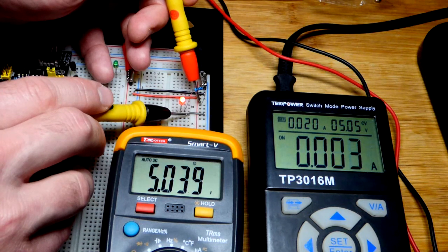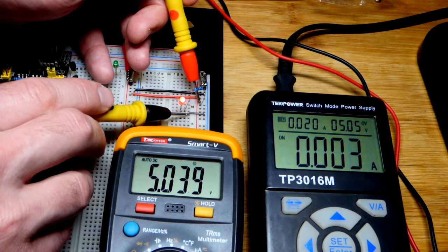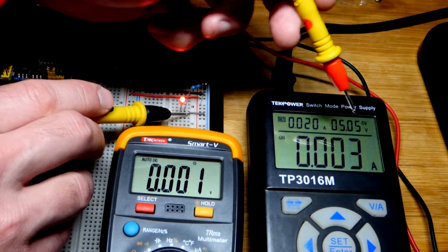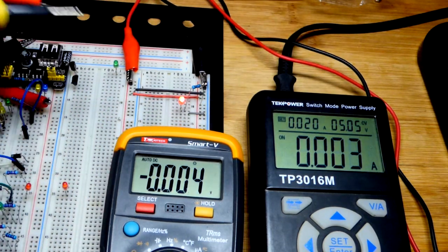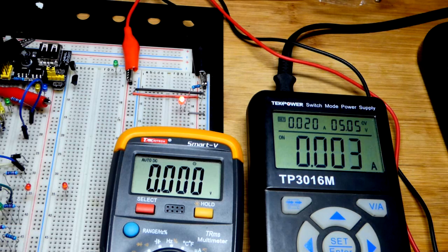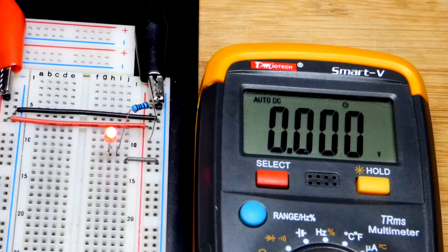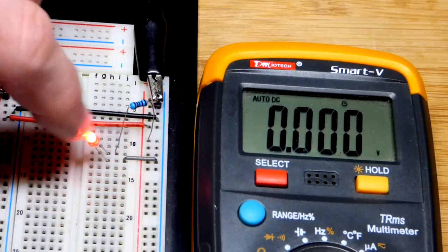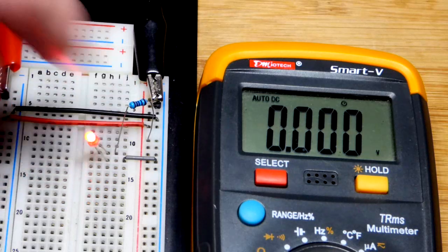We're going to look at that next. But there you can see we got slightly above 5 volts. We lost a little bit through the wires because the power supply is set to 5.05. But we're getting what we expect, so that's good. So now we zoom in. You can see the circuit a whole lot better.